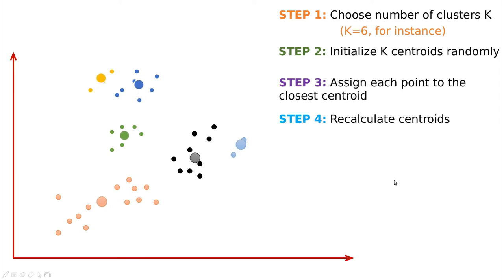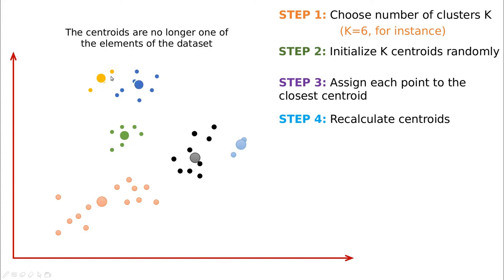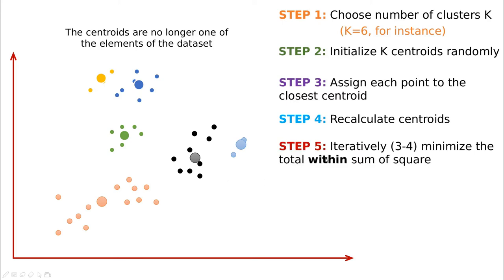We can now iterate, but remember that the centroids are no longer one of the elements of the dataset — these points are not part of the original data. There are some improvements to k-means that I'll mention at the end of the video to handle that situation. Step number five: we're going to repeat steps three and four over and over again until we minimize the total within-cluster sum of squares, meaning we want homogeneity inside each cluster and clear gaps between different clusters.